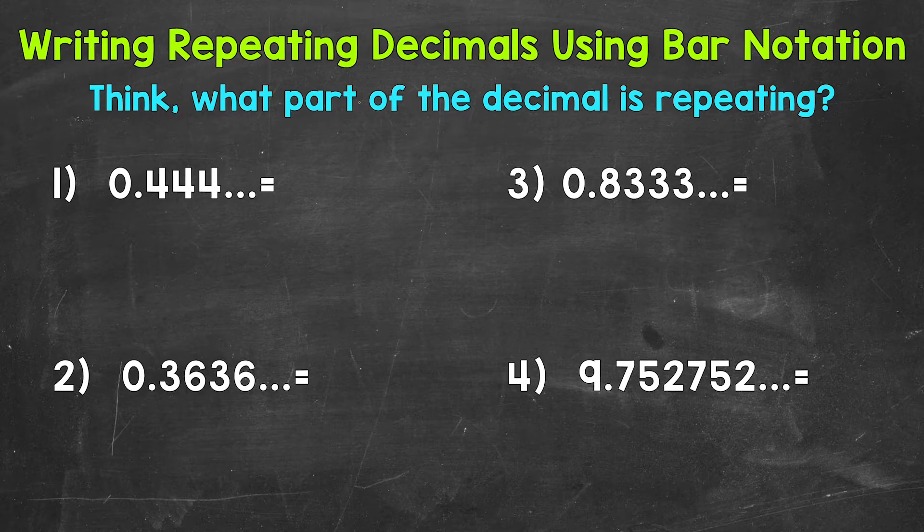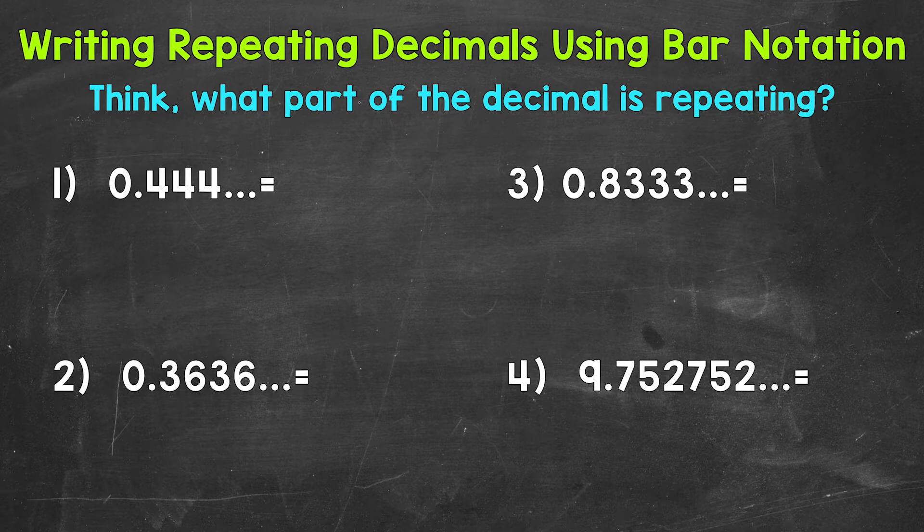Let's jump into our examples, starting with number one, where we have 0.444 repeating. When we write repeating decimals using bar notation, we place a bar over the digit or group of digits that repeat.